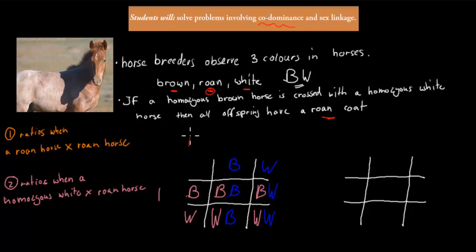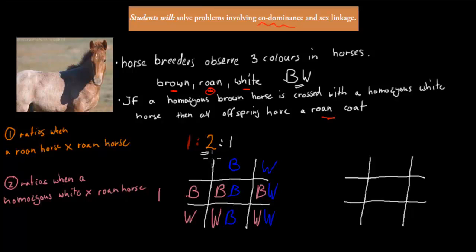So the ratios are: one brown, two roan — that in-between colour of brown and white — and one white. That's a 1:2:1 ratio. We're more likely to get roan horses than either brown or white when crossing a roan horse with a roan horse.